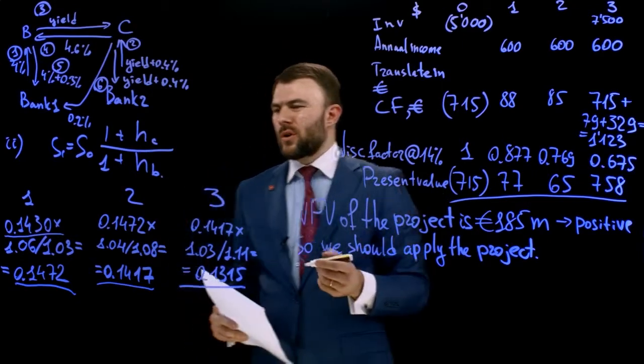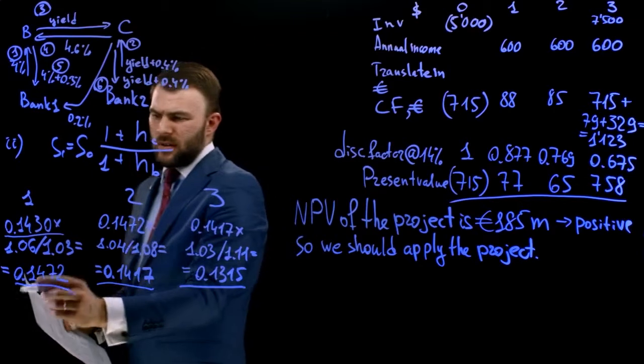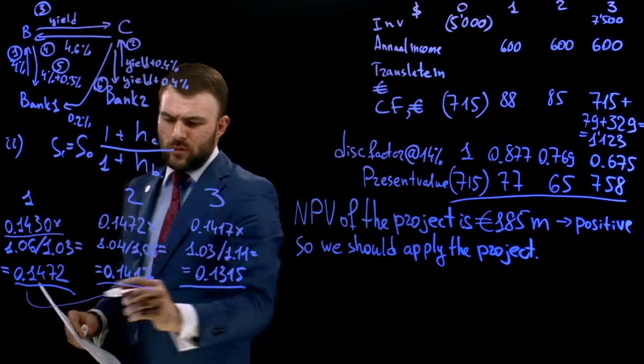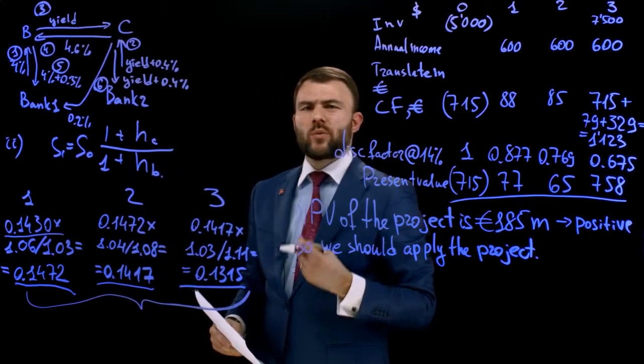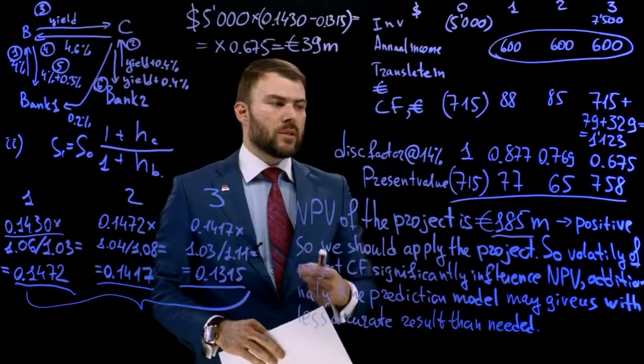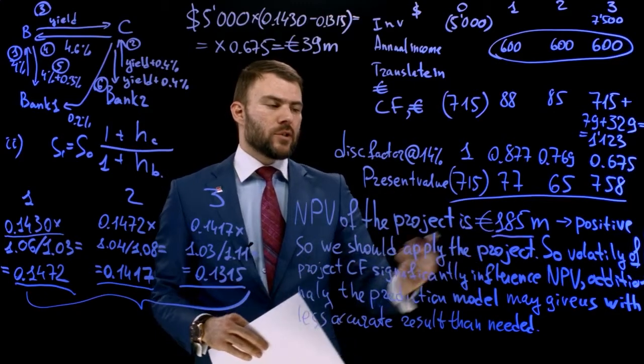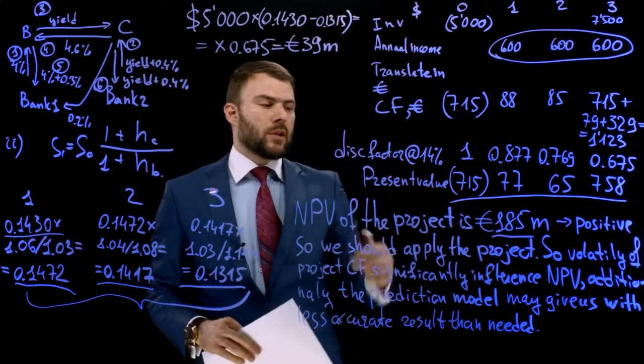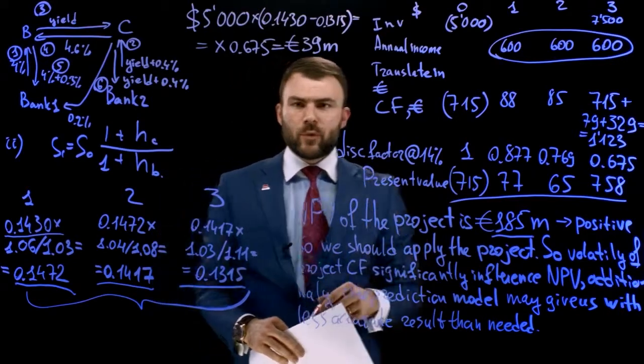The most weak assumption is that this approach will provide us with accurate prediction. So it is insignificant influence. It doesn't influence the making decision. Without 39 million, NPV will be positive, will stay positive.